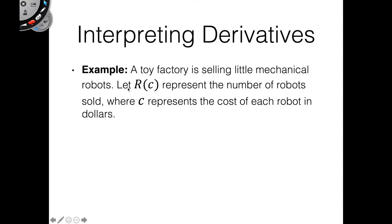So we've got this example here. A toy factory is selling these little mechanical robots. We're going to define this function R of C to represent the number of robots sold, where C — the input — is the cost of each robot in dollars. Now that we've got this exposition out of the way, I can ask you a couple of things based on the situation.